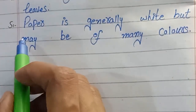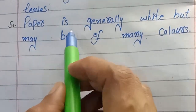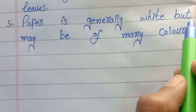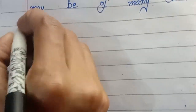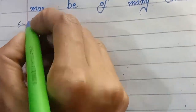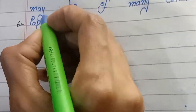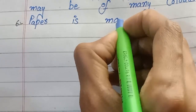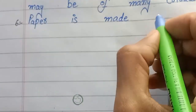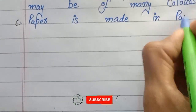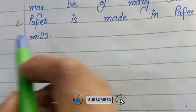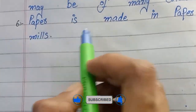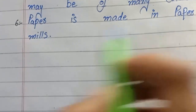5. Paper is generally white but may be of mannequin. 6. Paper is made in paper mills.